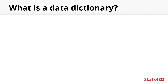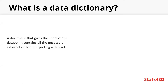So what is a data dictionary? Well, a data dictionary is simply a document that gives the context of a dataset, and it should therefore contain all the necessary information needed for interpreting a dataset.